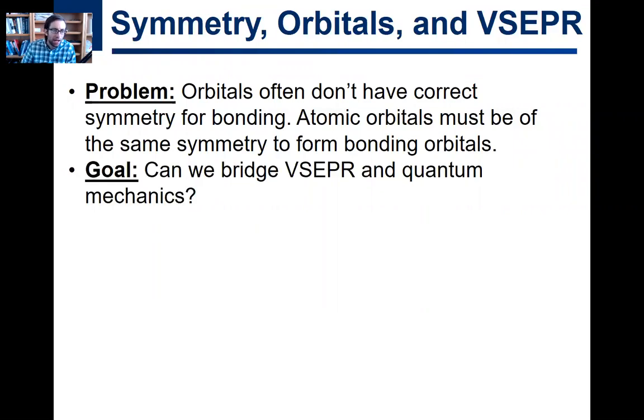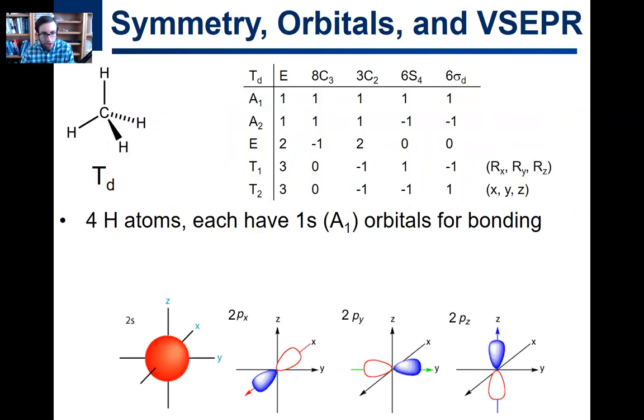And so what people have tried to do, in particular Linus Pauling, what he did was he tried to bridge VSEPR and quantum mechanics in this way to overcome this problem. And so here is an example. Take methane, very simple molecule. We know it has tetrahedral symmetry. We know that we have carbon-hydrogen bonds. We have four carbon-hydrogen bonds.